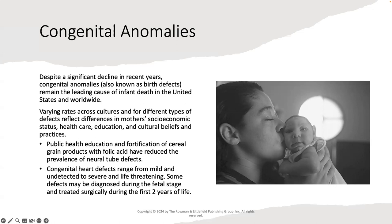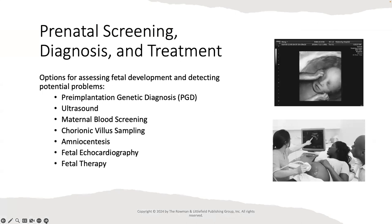Despite a significant decline in recent years, congenital anomalies — or birth defects — remain the leading cause of infant death in the United States and worldwide. Sometimes the cause of birth defects is unknown; sometimes it is associated with a teratogen or a drug that was thought to be safe during pregnancy but was not. Birth defects can range from a minor inconvenience — where people may live their entire lives without knowing they have one — to extremely serious and life-threatening.